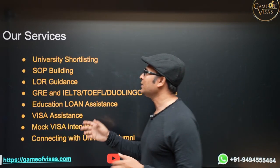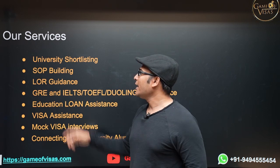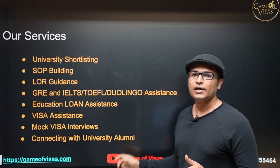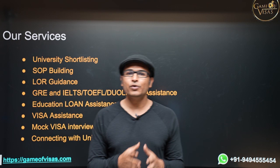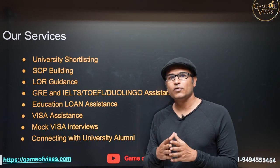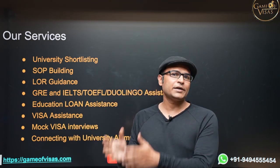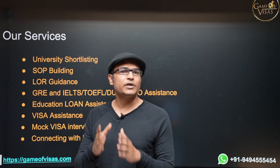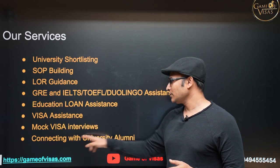These are all the services we provide: university shortlisting based on your profile, statement of purpose building, LOR guidance, GRE and English test assistance, and education loan assistance. You don't need any collateral — without any security, you can get an education loan. Getting an education loan is very simple these days. Whatever the fee amount, you have a range of universities — 10 lakh, 20 lakh, or 50 lakh — and you will get a complete education loan, which you can pay off in one year after getting a job. We also do visa assistance, mock visa interviews, and connect you with university alumni.